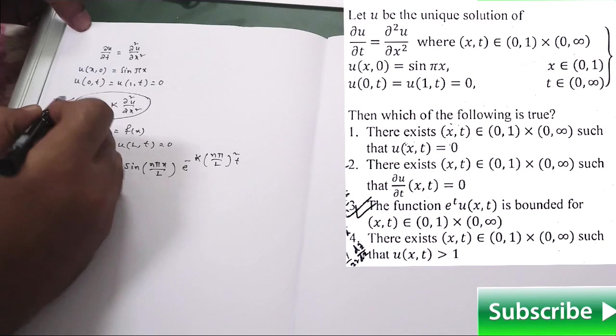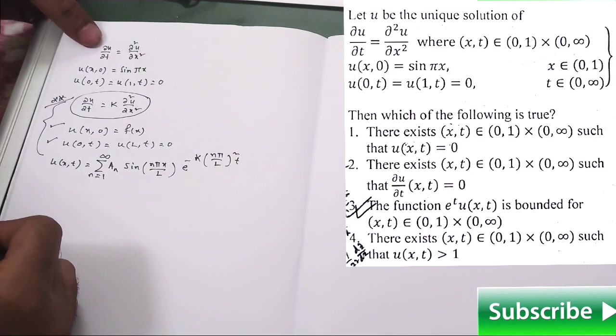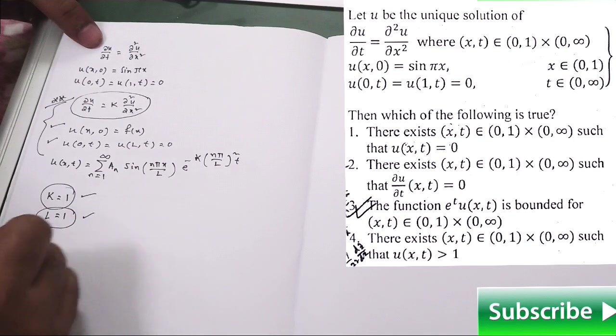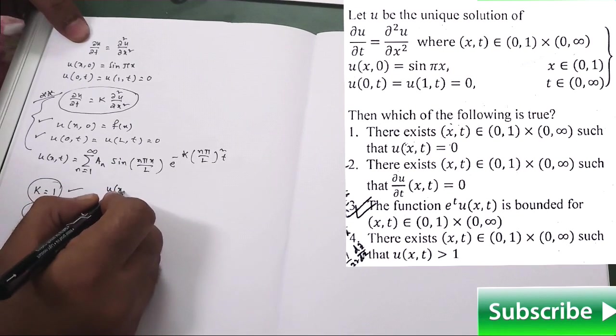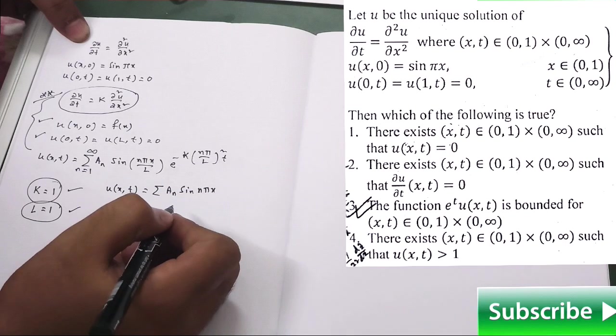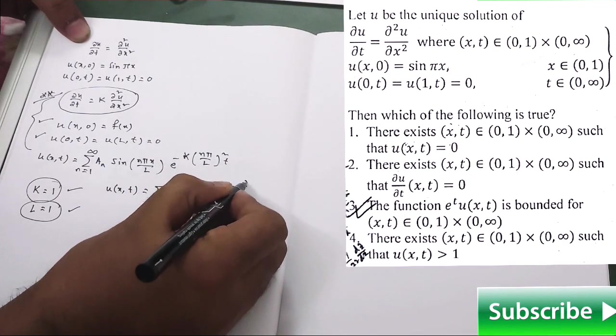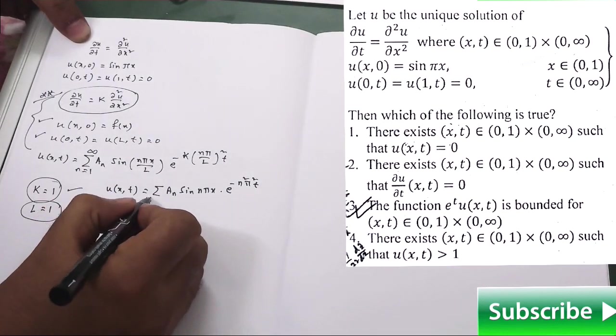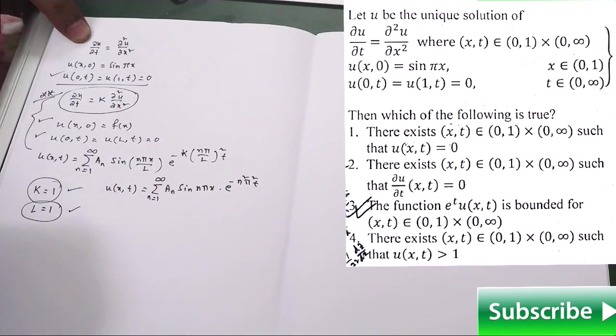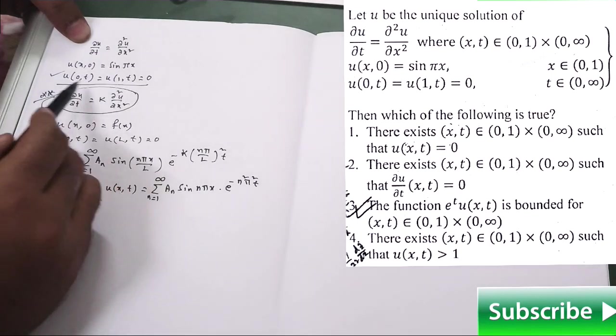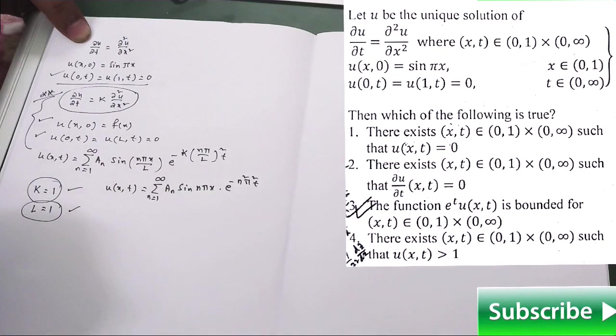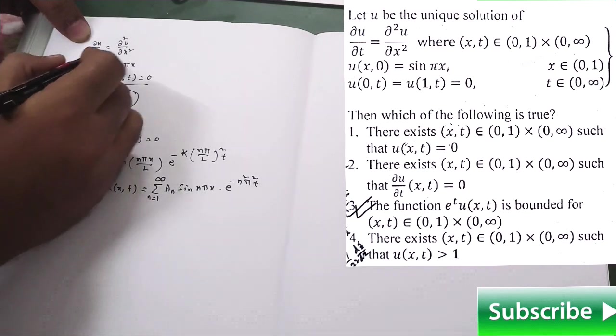This thing you need to know. Now from the given equation it is clearly visible that k is equal to 1 and our capital L is also 1. Simply put in this formula and you will get a_n sin(nπx) into e to the power minus n²π²t, n runs from 1 to infinity. So this part we have used because from here from this boundary condition actually we are getting the value of u of L and we have used the value of L here as well as the value of k.